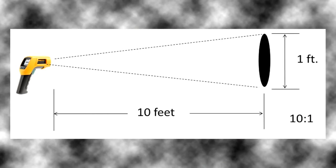Distance to spot ratio is used to express the ability of an infrared thermometer to measure the temperature of a surface from a distance.